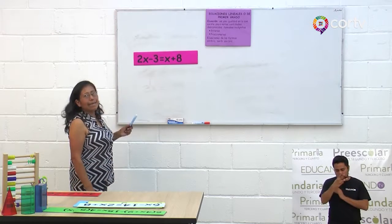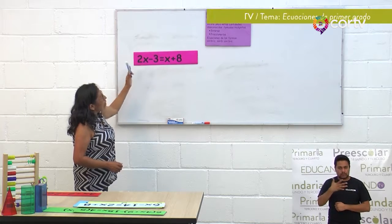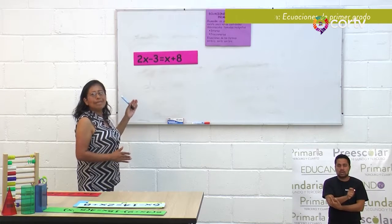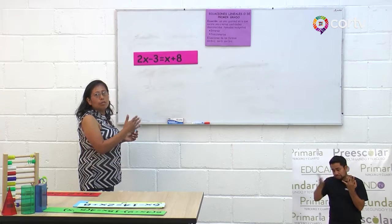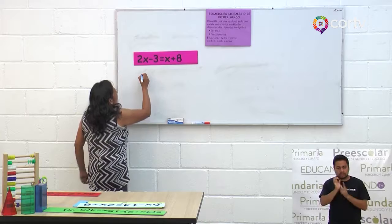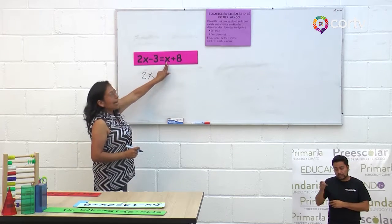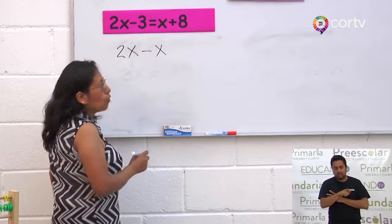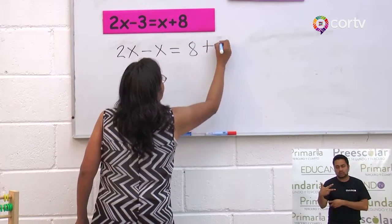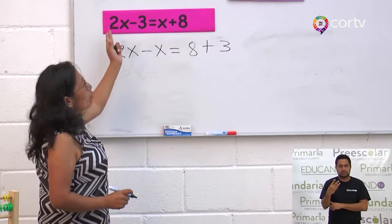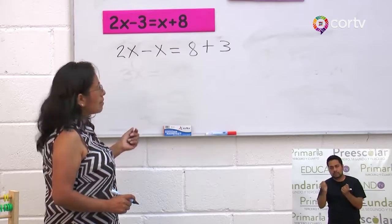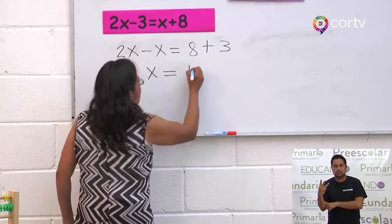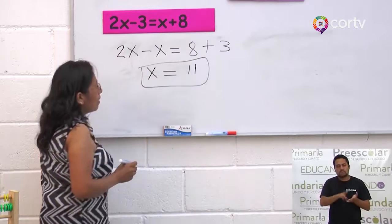2X menos 3 igual a X más 8. Aquí tenemos términos en el primer miembro y términos en el segundo miembro. En el primer miembro dejamos los términos con variable X, y en el segundo miembro los términos independientes. Queda: 2X menos X igual a 8 más 3. 2X menos X es una X. 8 más 3 es 11. X igual a 11.